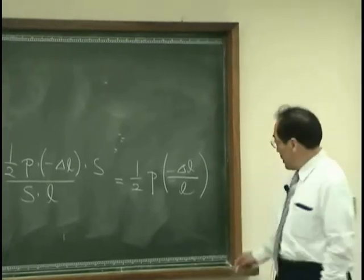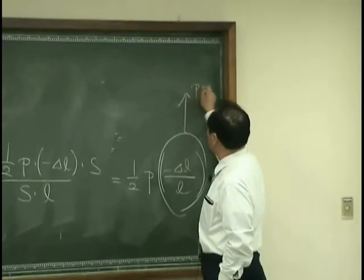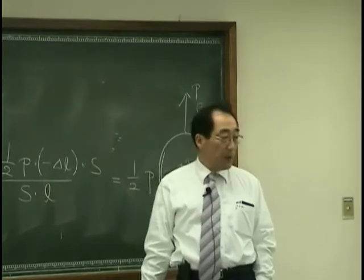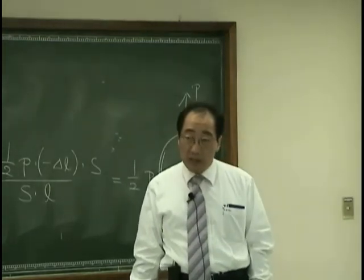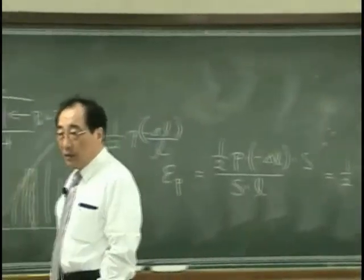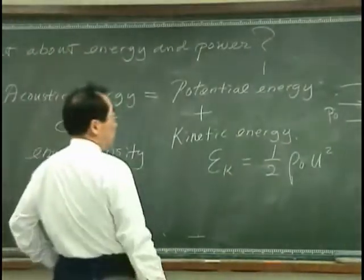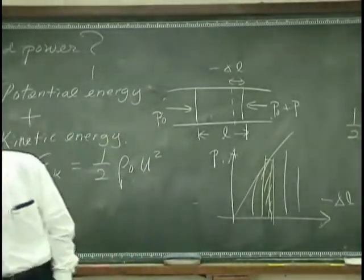delta L and L. And we want to convert this term somehow to P or rho or U. That is the parameter we have been handling. And we want to convert to, right? How to do it. Then we can use the conservation law, conservation of mass.